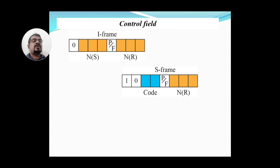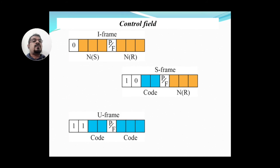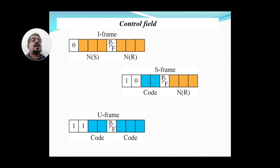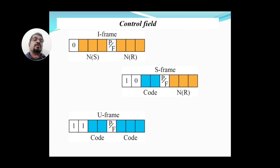For a Supervisory frame, the first bit starts with one. Only Information frames start with zero; all other frames start with one. If the first bit is one, it is understood as not original information — it belongs to either a supervisory or unnumbered frame. If the next bit is zero, it is understood as a Supervisory frame.